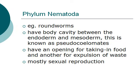The phylum Nematoda consists of members such as the roundworms. They usually have a body cavity between the endoderm and the mesoderm. This is also known as pseudocoelomates. This type of body cavity was mentioned in the previous lectures that I've posted on YouTube.